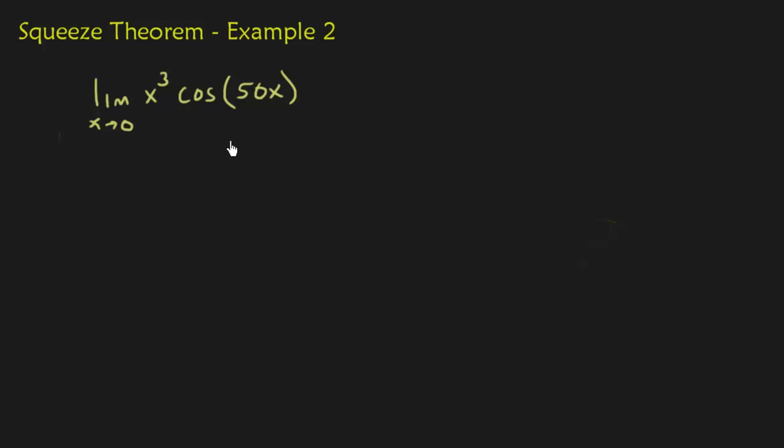Alright, in this video we're going to do the squeeze theorem. We're going to do our second example. So we have the limit as x approaches 0 of x cubed cosine of 50x. Now what's nice about this problem is that it really doesn't require the squeeze theorem. If I just plug in 0, I get 0 cubed, which is 0, and cosine of 50 times 0, and that's just 0 times cosine of 0, which is 0 times 1, which is 0.